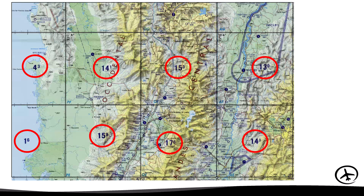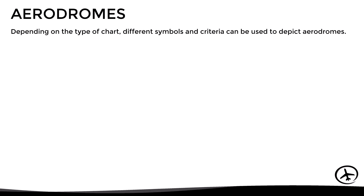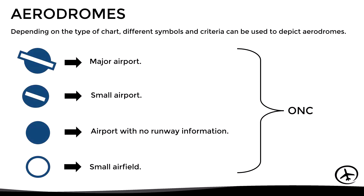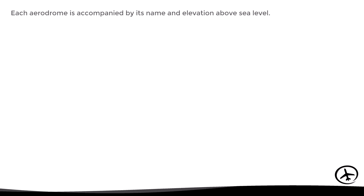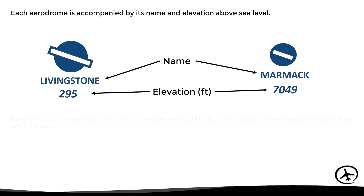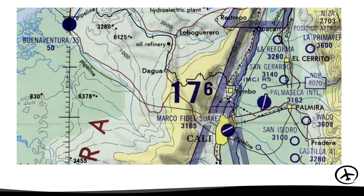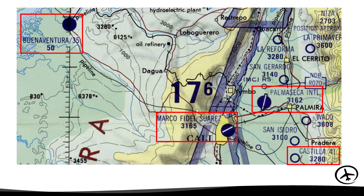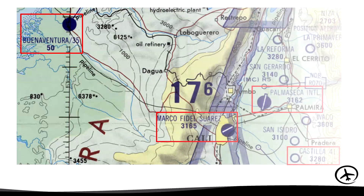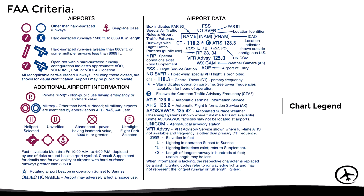One of the most important elements in navigation charts are the aerodromes. Depending on the type of chart, different symbols and criteria can be used to depict them. For example, in operational navigation charts each aerodrome is accompanied by its name and elevation above sea level, and in some cases the first two digits of the runway length in feet are included. Other chart types, such as those developed by the FAA, may have different criteria including more detailed information about aerodromes.